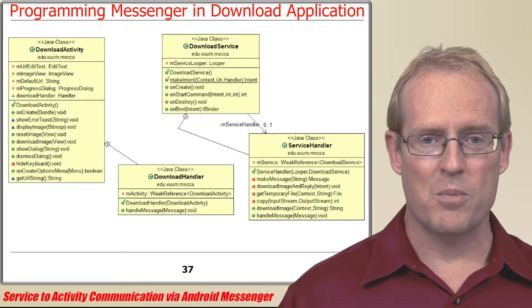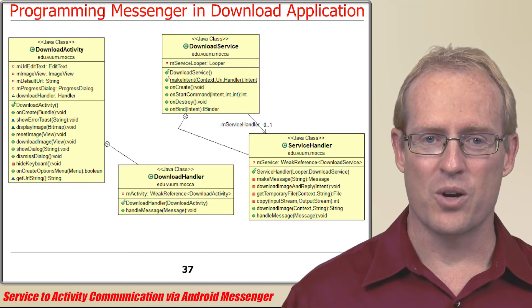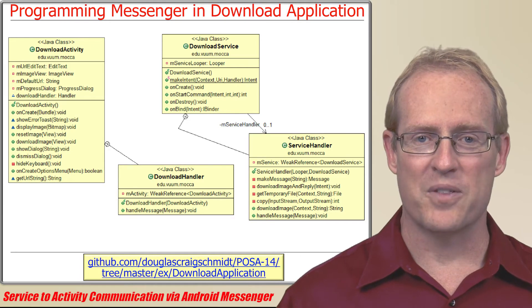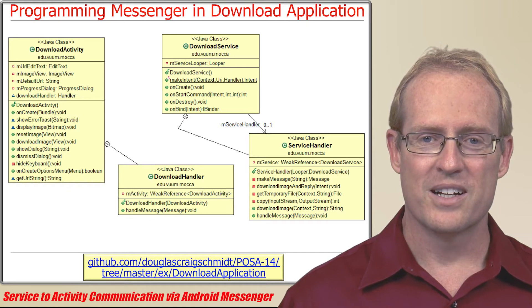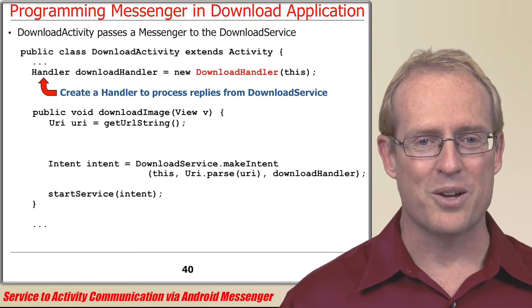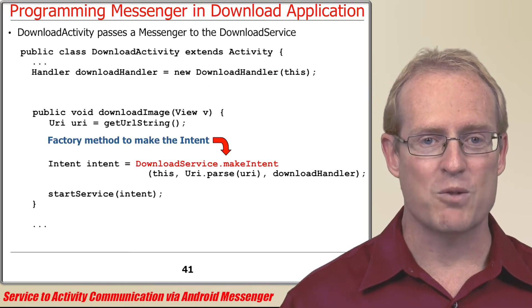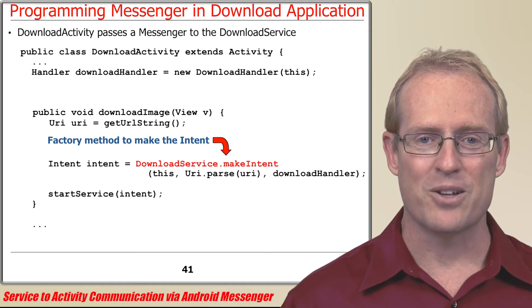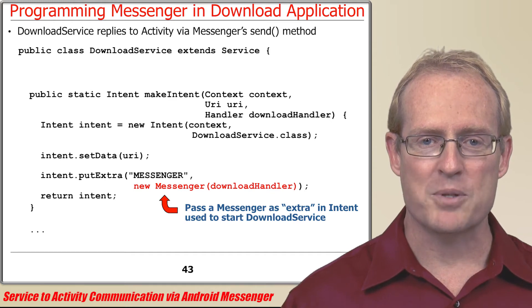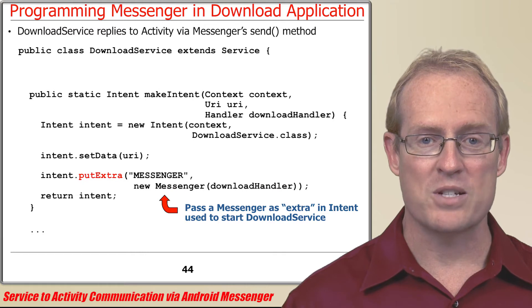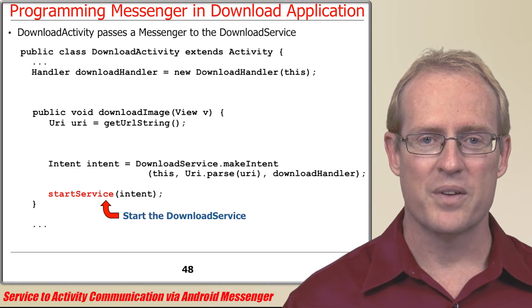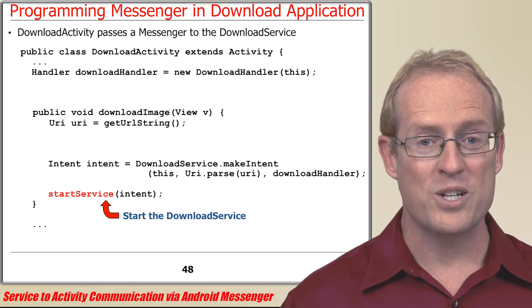Now that we've given an overview of the steps performed by the download activity and download service, we'll analyze the source code, focusing on the methods in download handler and service handler that weren't covered in earlier videos. All this source code is available at this URL, which I encourage you to download and review as you watch this video. We'll start by recapping key portions of the download activity, which creates an instance of download handler that processes replies from the download service. The downloadImage method dispatched in response to a button click calls the makeIntentFactory method defined in download service, which localizes the logic for making the right intent. In particular, it creates a new Messenger that encapsulates a reference to the download handler and adds a reference to the Messenger as an extra to the intent under the name Messenger. The intent returned from makeIntent is then passed to the startService method, which runs the download service in a separate process, launched if it hasn't been started yet.